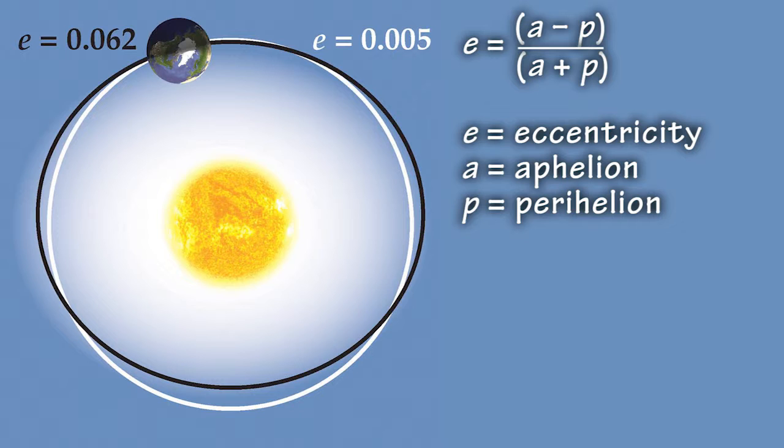where E is the eccentricity, A is the aphelion, farthest distance from the Sun, P is the perihelion, closest distance to the Sun.